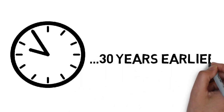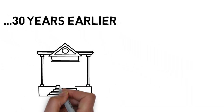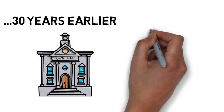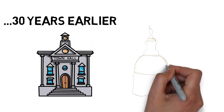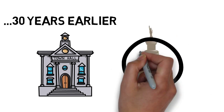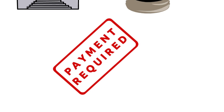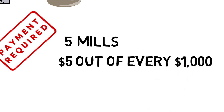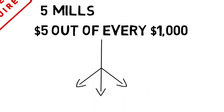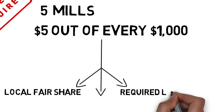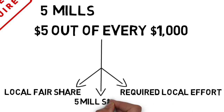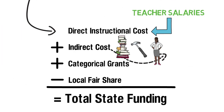To understand why, it's important to look back over 30 years. Before QBE, it was local taxes — not state money — that paid the most for schools. When QBE was being created, there was a fear that some local districts would just stop paying for schools altogether and make the state pay for everything. So lawmakers built in the requirement that each school system taxes their district five mils, or $5 for every $1,000 of property value. This is known as local fair share, or required local effort, or five mil share. So before the state sends down all the dollars needed to run a school system, it deducts the local fair share.